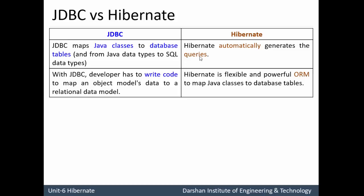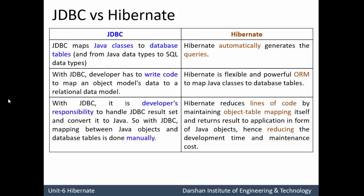Difference two: with JDBC, developers have to write code — from Class.forName all the way through handling the ResultSet — to map object model data to a relational data model. While Hibernate is flexible and has a powerful ORM to map Java classes to database tables. Difference three: with JDBC it is the developer's responsibility to handle the JDBC ResultSet and convert it to Java objects. Thus, with JDBC, mapping between Java objects and the database is done manually, which is a very cumbersome task.